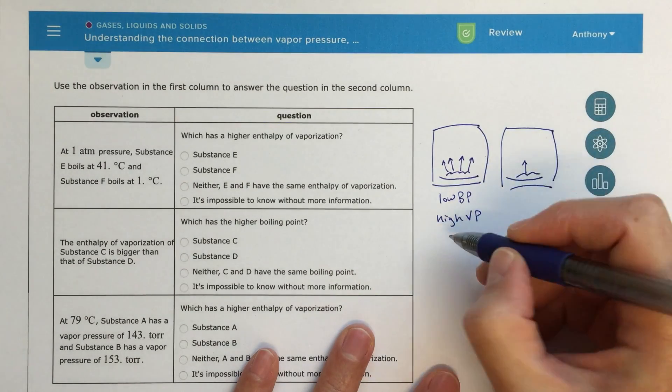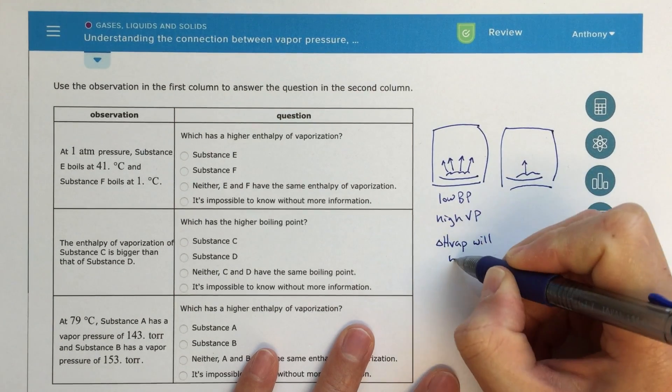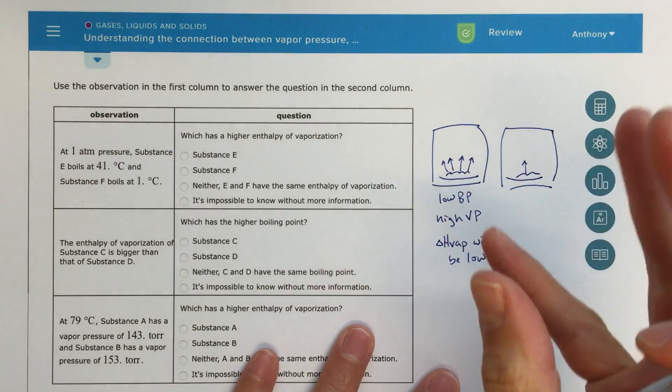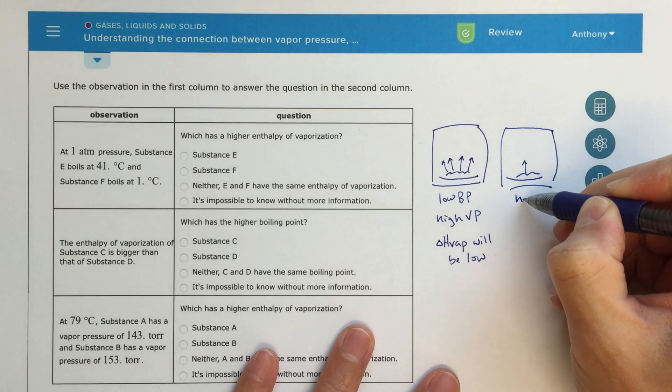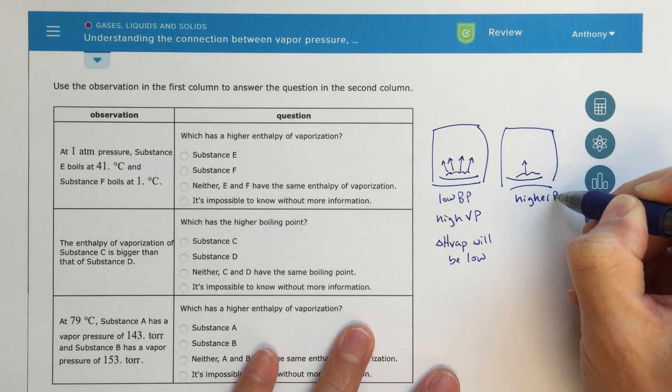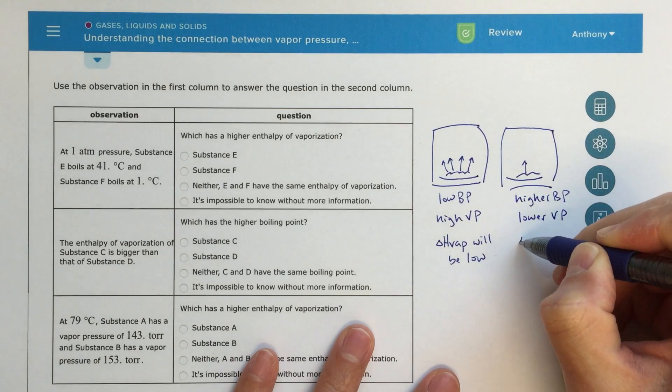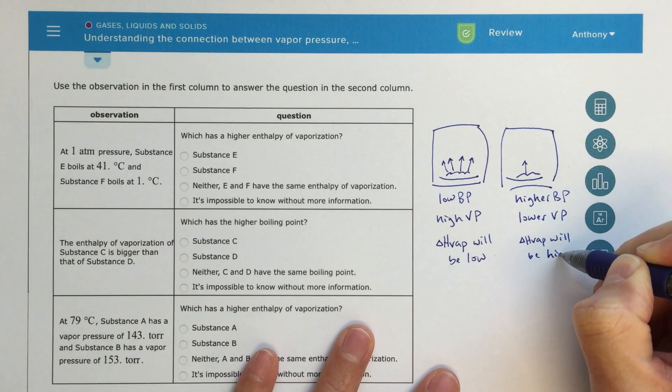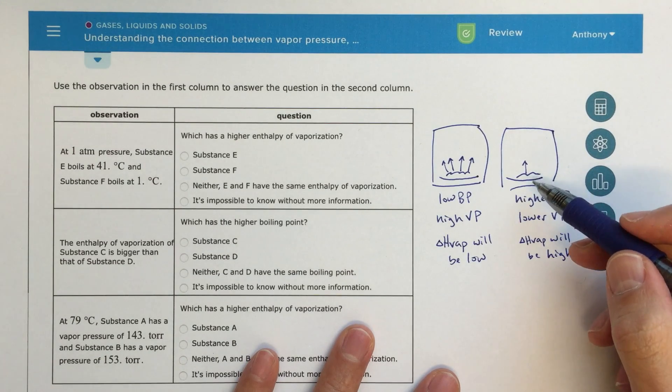And then the last thing is the enthalpy of vaporization. So the delta H of vaporization will be low. So, because delta H of vaporization is telling you how much energy does it take to make it go into the vapor phase, then this sort of will be the relationship. So over here, we've got a higher boiling point, we've got a lower vapor pressure, and then delta H of vaporization will be high, will be large, will be bigger, because it takes more energy to make it go from the liquid phase to the gaseous phase.